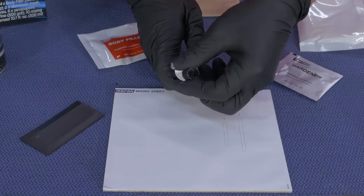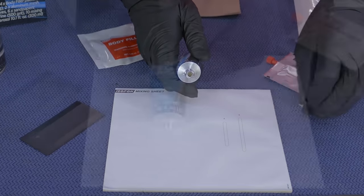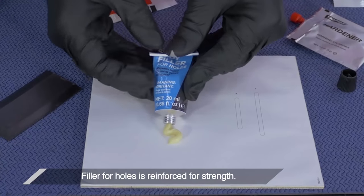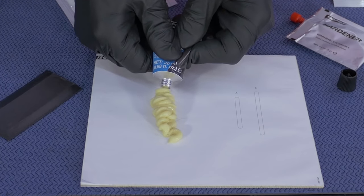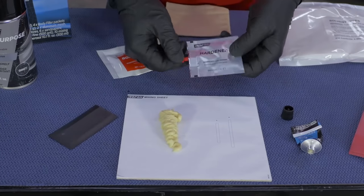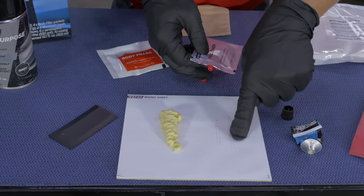Remove the cap from the body filler for holes tube and pierce the opening with the cap. Squeeze out all the body filler for holes onto the mixing sheet, and then squeeze out the hardener to the length B on the sheet.